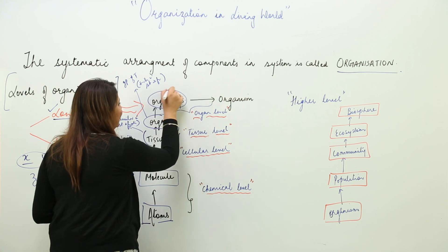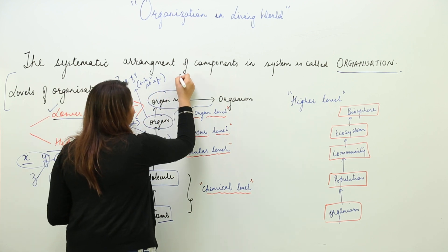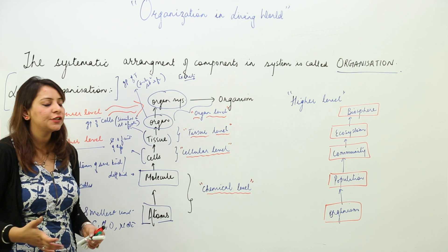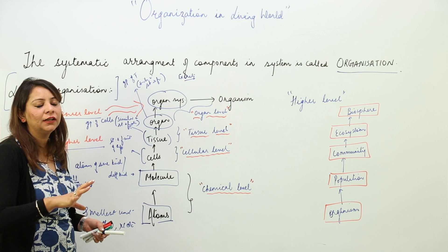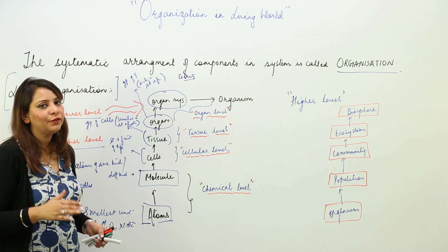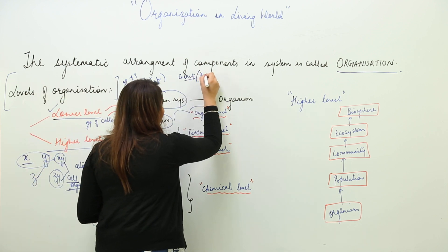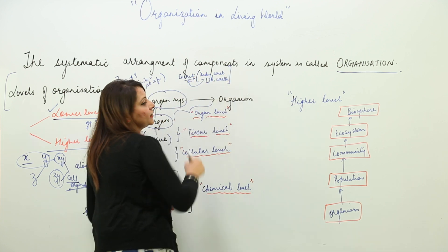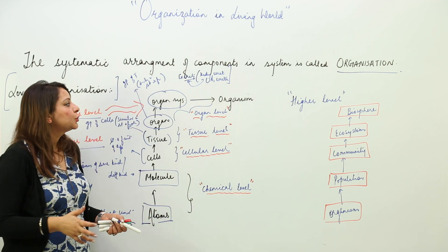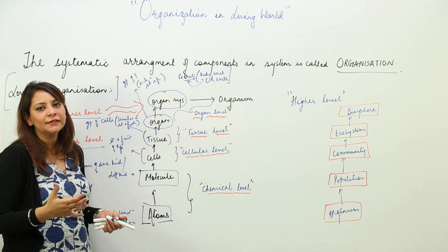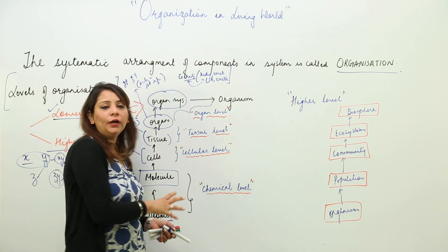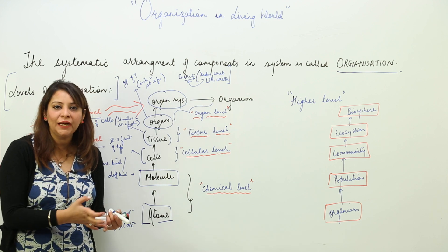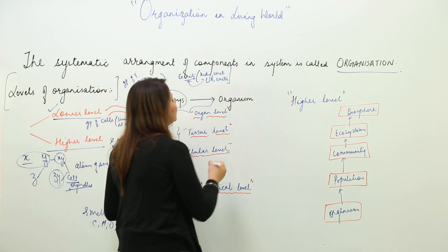Different organs which perform the same function give rise to an organ system. For example, the excretory system consists of kidney, ureter, urinary bladder, and urethra — these are all components of the excretory system performing the same function, which is excretion. Similarly, we have circulatory, respiratory, and digestive systems.